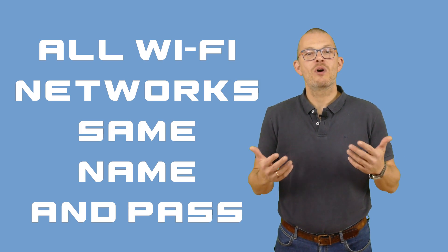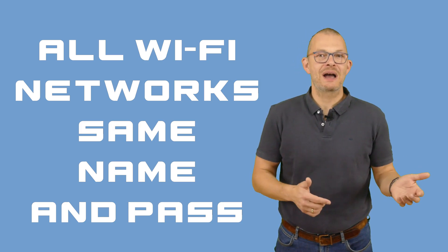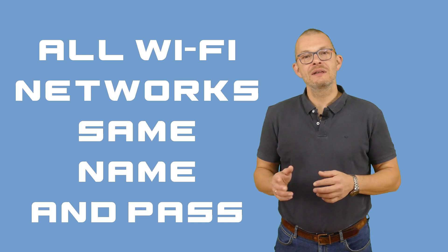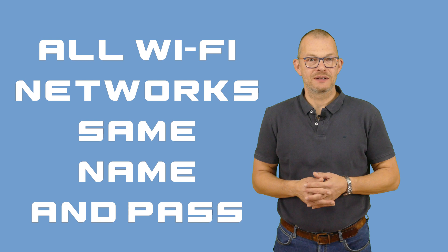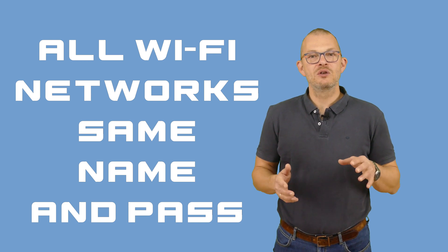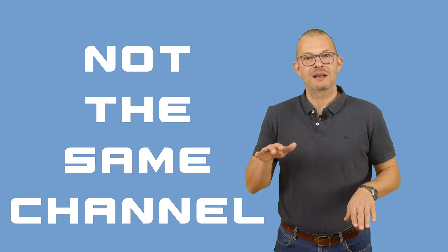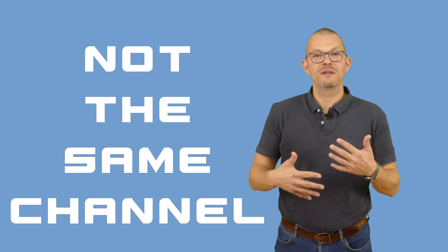Also the two access points need to have the same ESSID – that means the same Wi-Fi network name and the same password. Only the hidden network identifier – the BSSID – will be different. And also I need to put them on different Wi-Fi radio channels. I am doing this because I do not want them to interfere with each other on a radio level.